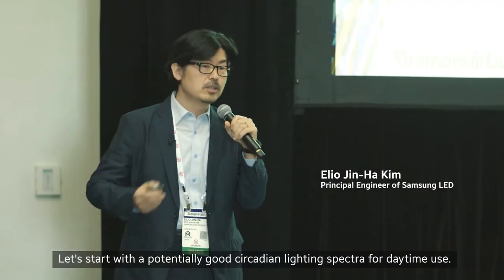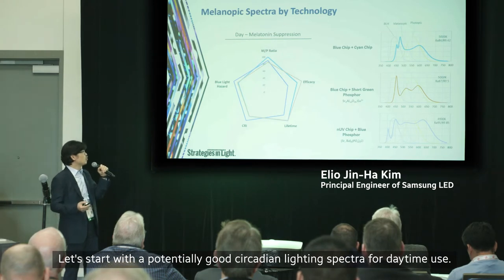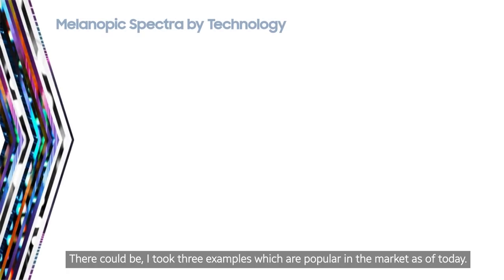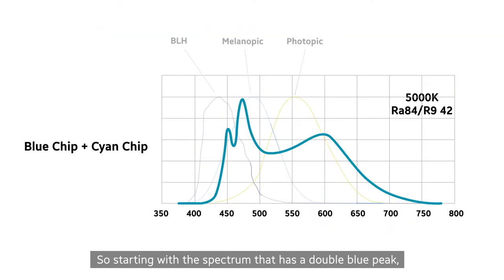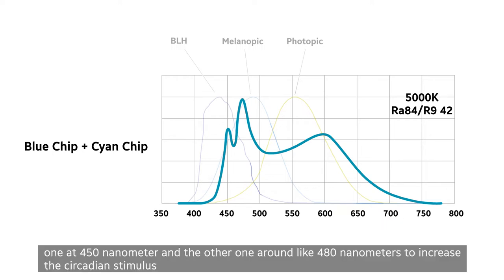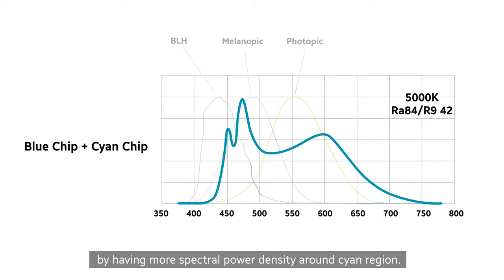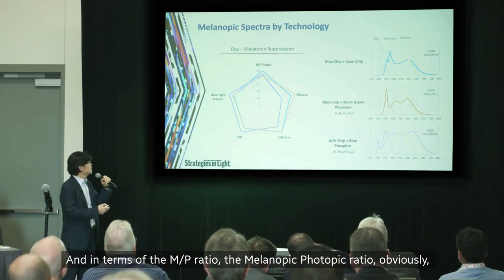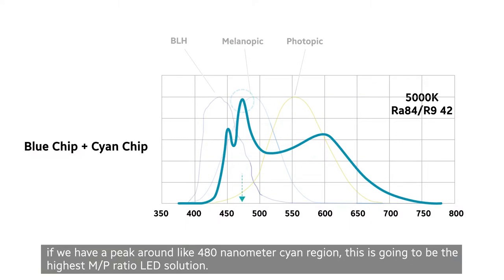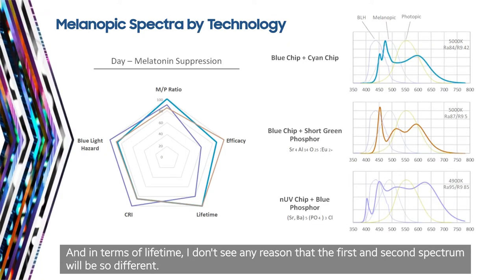Let's start with potentially good circadian lighting spectra for daytime use. I took three examples which are popular in the market today. Starting with a spectrum that has a double blue peak — one at 450 nanometers and the other around 480 nanometers — to increase the circadian stimulus by having more spectral power density around the cyan region. In terms of the melanopic-photopic ratio, having a peak around the 480 nanometer cyan region gives the highest MP ratio LED solution.